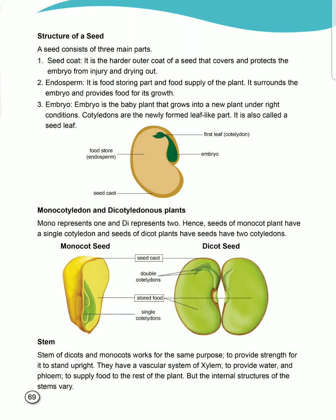In monocot seeds, food is stored in just one part, but in dicot seeds, food is stored in two parts. Moving on to stem: the stem of dicots and monocots works for the same purpose — to provide strength for the plant to stand upright. The outer part of the stem works the same way.